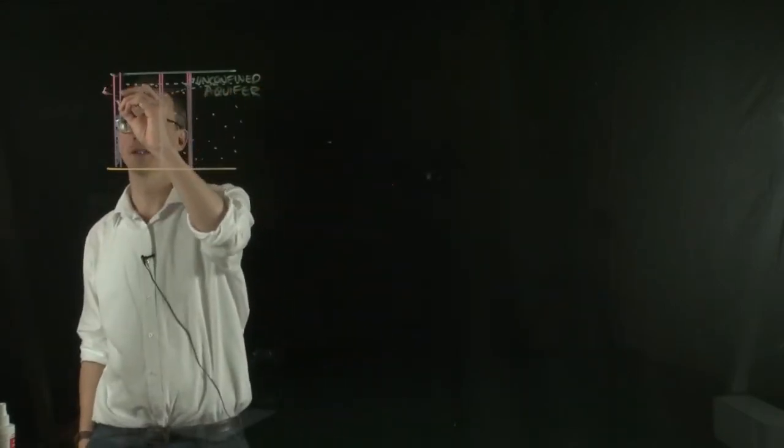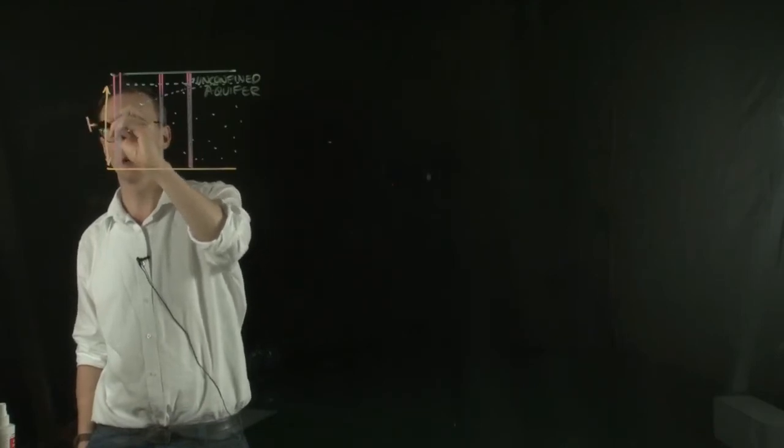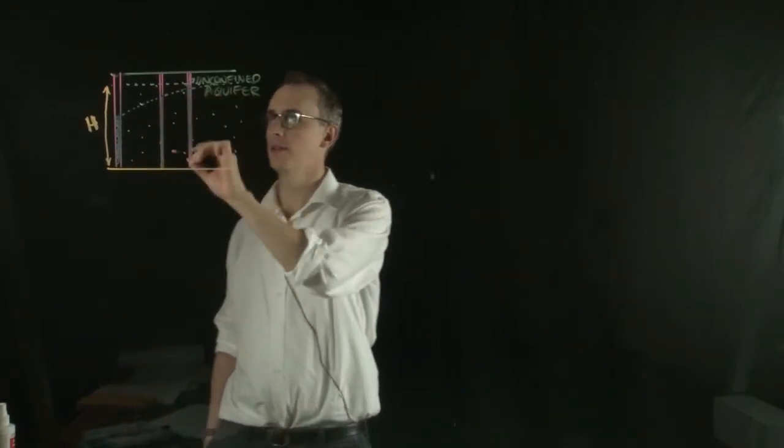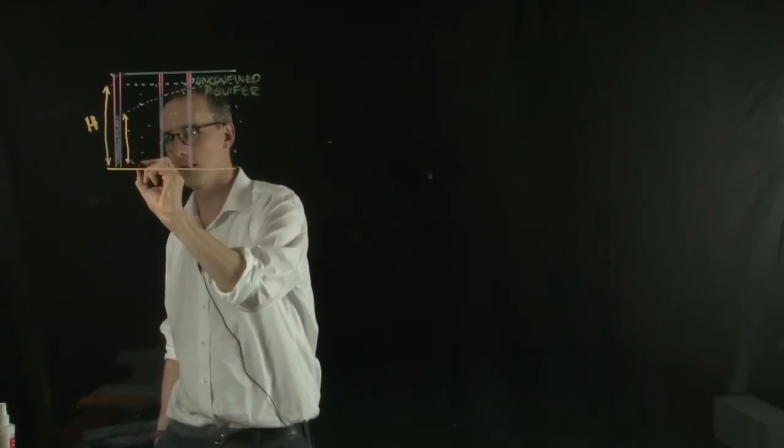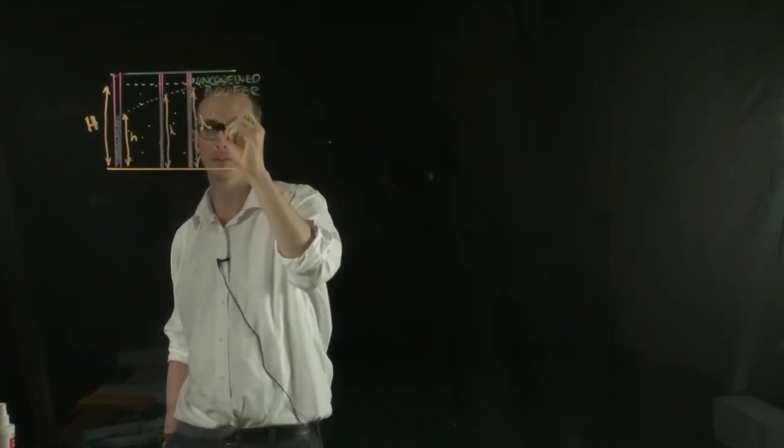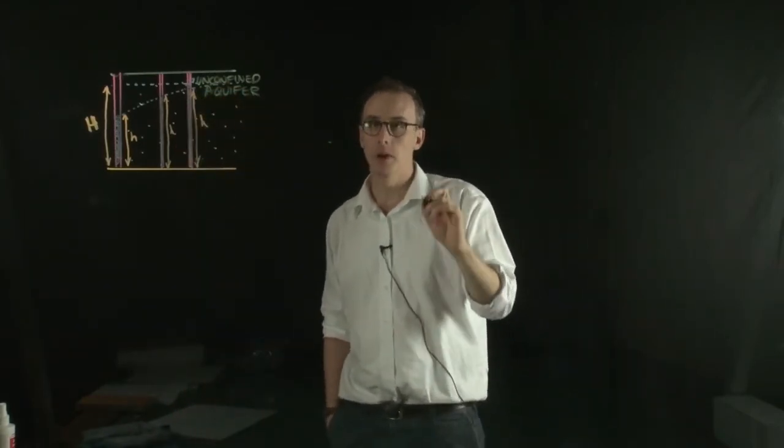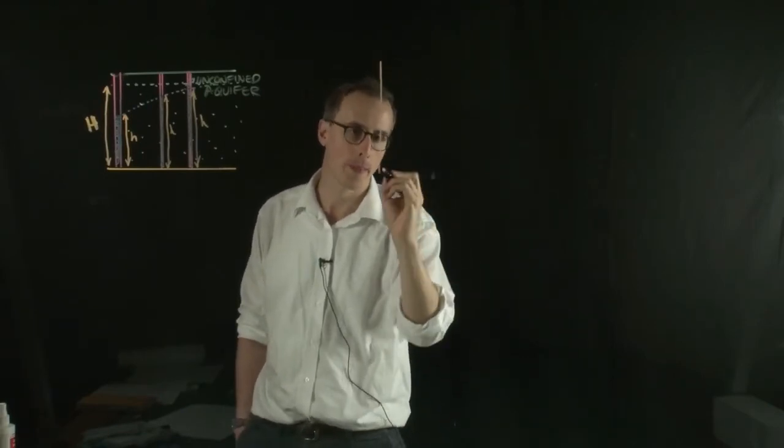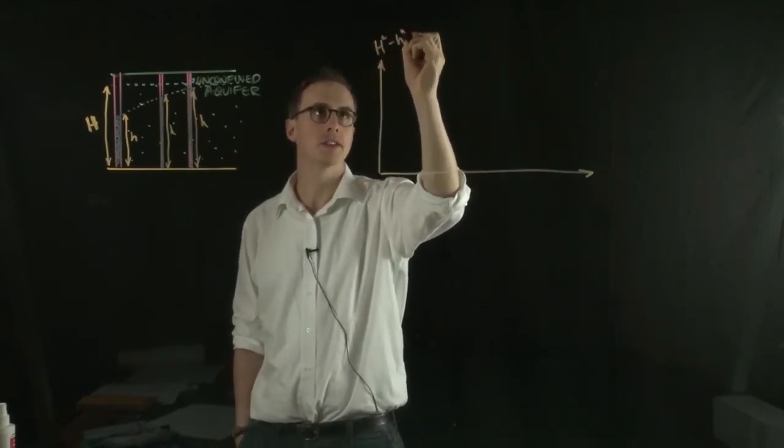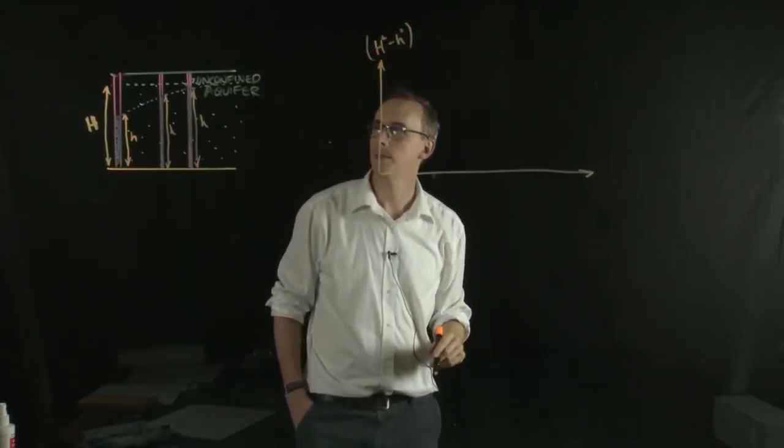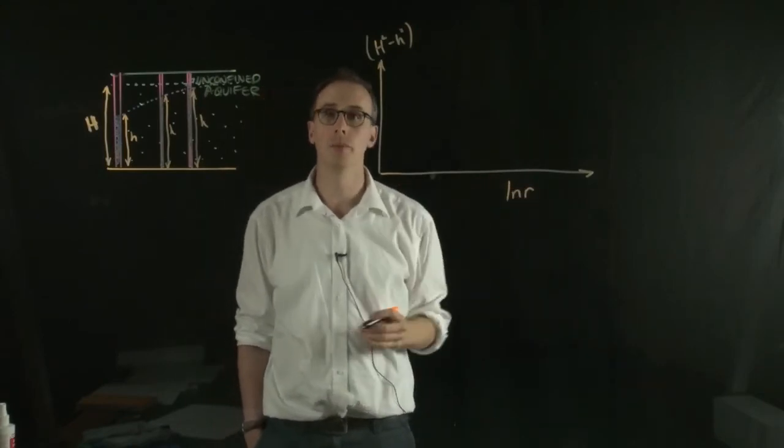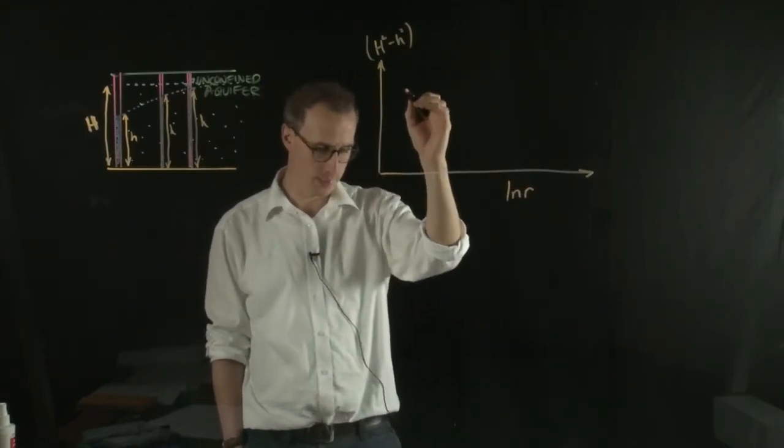So if you know the total height or the total head that existed before the pump test started, and that's called H. And if you take the head at each of these observation points, you now plot a graph of h squared minus H squared or big H squared minus little h squared for the observational points. So if you look at each of these points, a known radius away from the pumping hole, you'll get a straight line.